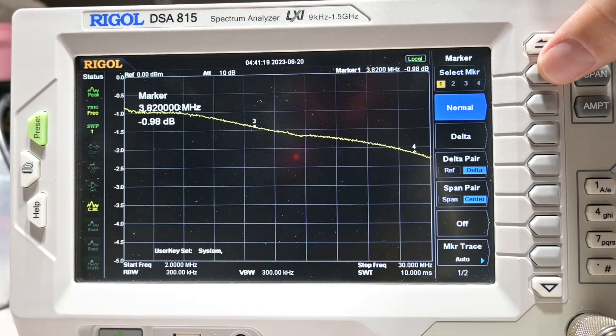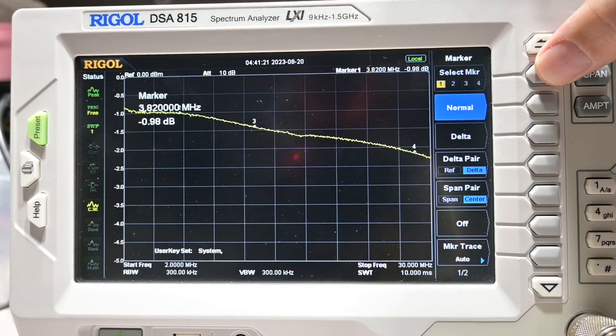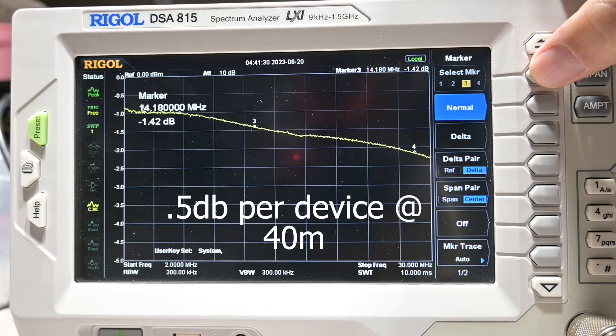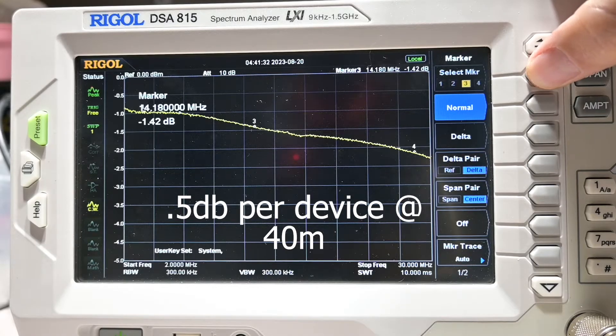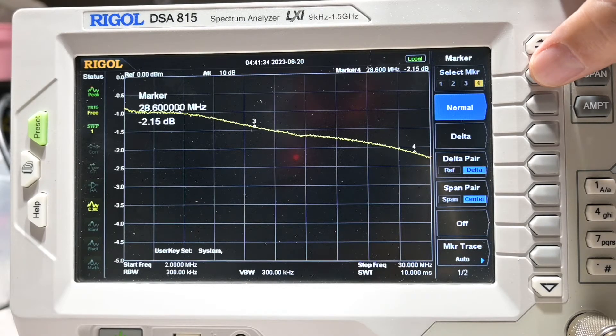Well, let's see how we stack up. We're looking at 80 at less than a half a dB per device. We're looking at about 1 dB per device at 40. At 20, 7 tenths of a dB. And at 10 meters, we're looking at less than 1 and 1 tenth of a dB per device.